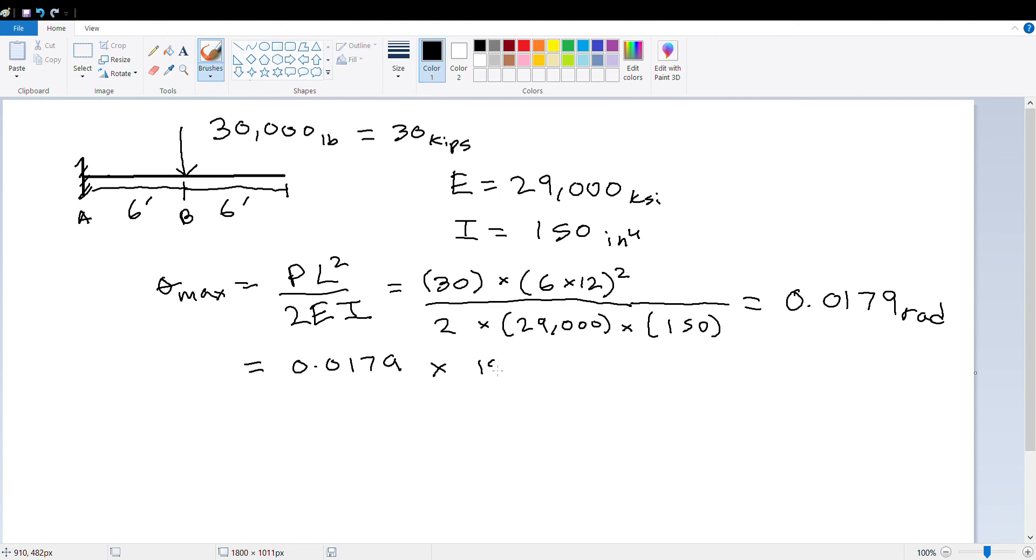So if you want to actually convert radians to degrees, it's just going to be 0.0179, and the conversion is 180 over pi. And then let's do that. So I'm going to calculate 0.0179 times 180 divided by pi. You're going to get 1.025, and that is going to be in degrees. And that is going to be your answer.